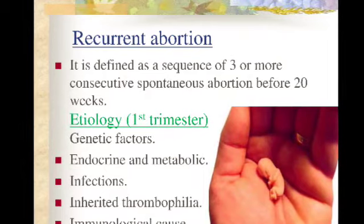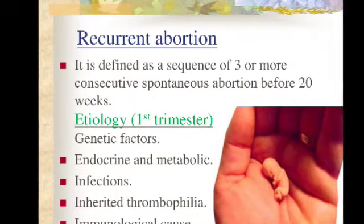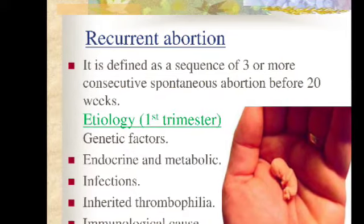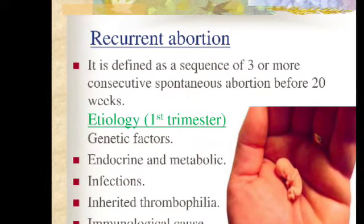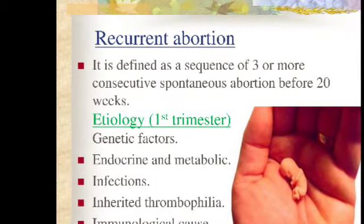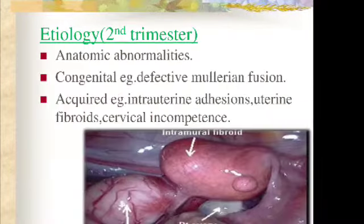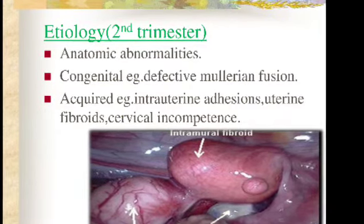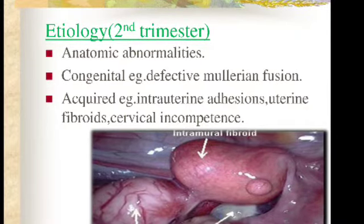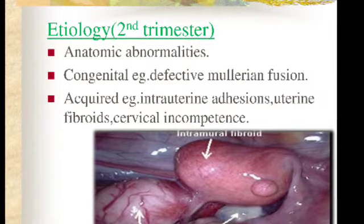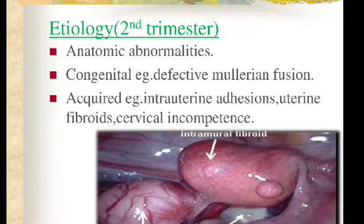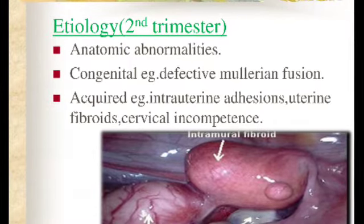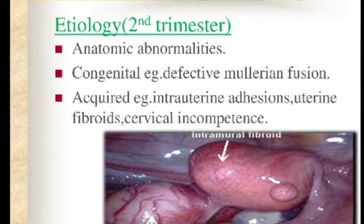Etiology for first trimester: genetic factors, endocrine and metabolic factors, infection, inherited thrombophilic agents, and immunological causes including autoimmunity and alloimmune causes, and maternal illness. Etiological factors for second trimester: anatomical abnormalities including congenital abnormalities such as defective Mullerian fusion, and acquired abnormalities like intrauterine adhesions, uterine fibroids, and cervical incompetence.